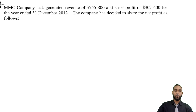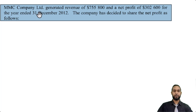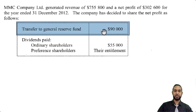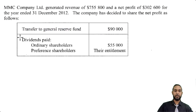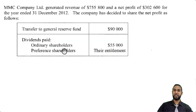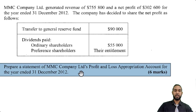Let's take a look at part B. MMC Company Limited generated revenue of $755,800 and a net profit of $302,600 for the year ended 31st December 2012. The company has decided to share the net profit as follows: a transfer to the General Reserve Fund, ordinary shareholders receiving $55,000 in dividends, and preference shareholders receiving their entitlement — which we'll need to calculate. We're required to prepare a statement of MMC Company Limited's profit and loss appropriation account for the year ended 31st December 2012.